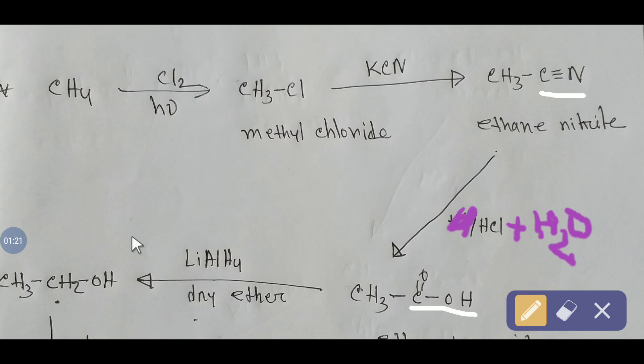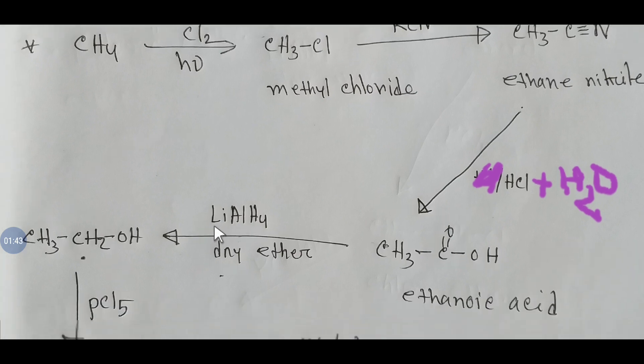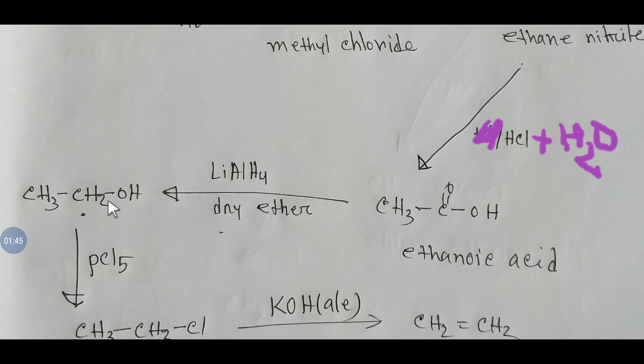If you reduce this acid group with lithium aluminum hydride in the presence of dry ether, the carbonyl group will be reduced to a methylene group. You are getting a primary alcohol, and the name of this compound is ethanol.